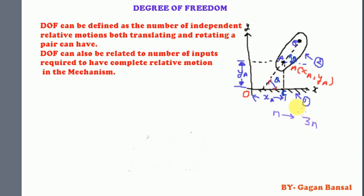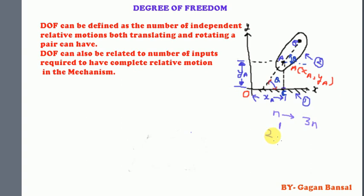Now suppose if point A on link two is hinged with point C on fixed link one, the two variables x_A and y_A for point A will be fixed. The position of link two will now be determined by a single variable, that is theta only. It means that link two, which was earlier having three degrees of freedom, will now have only one degree of freedom. This shows that degree of freedom is lost by two for every lower pair in the mechanism.